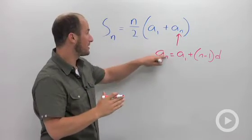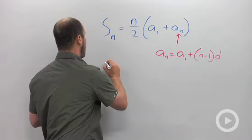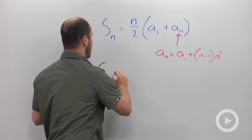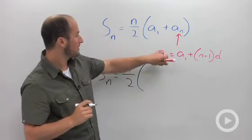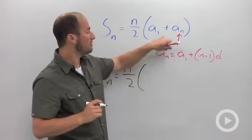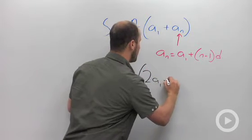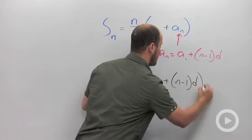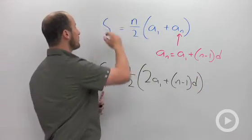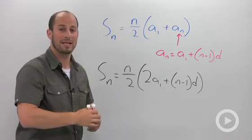Okay, so using substitution, we could sub this right in and rewrite this equation another way. S of n is equal to n over 2 stays the same. And what we end up with now is a sub 1 plus a sub 1. So we end up with 2 a sub 1 plus n minus 1 times d. Okay, so two different equations to find the partial sums for an arithmetic sequence.